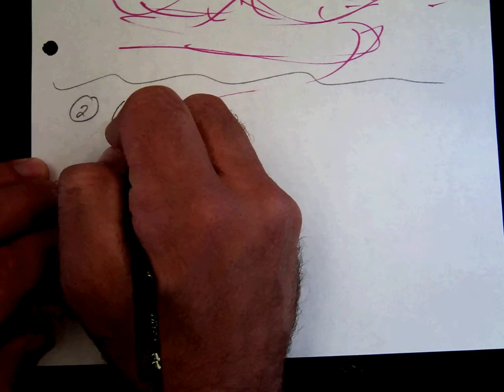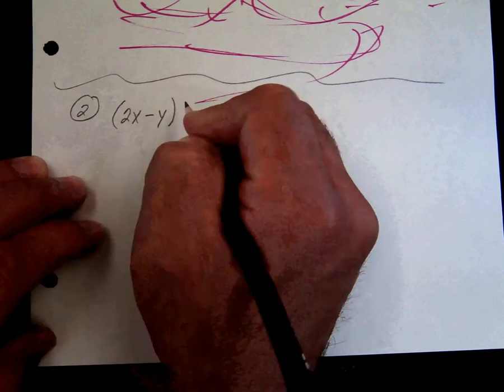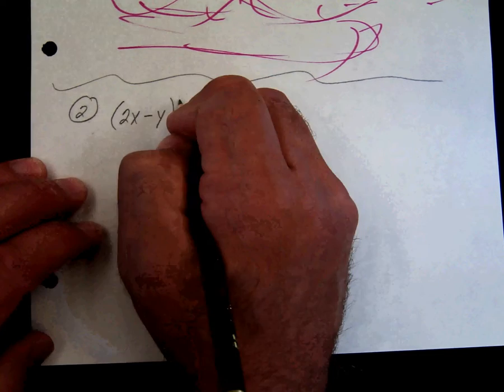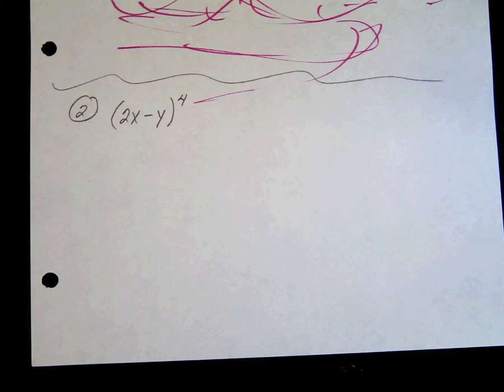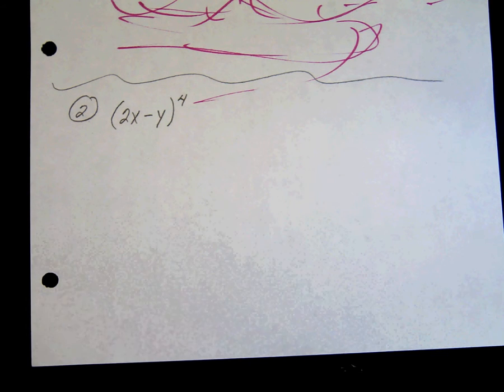Okay, and number two, you're doing 2x minus y, and you're raising it to the fourth. So this is a case where you are going to have to do a fifth step. And here's what that would be.